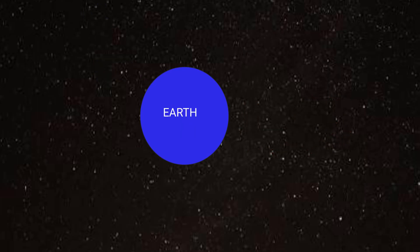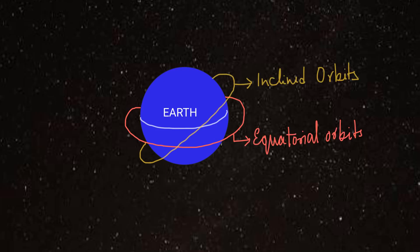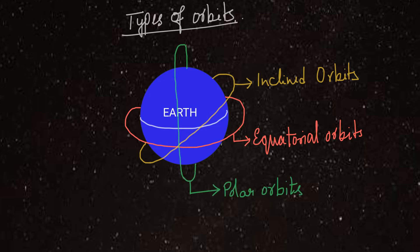We'll now see major types of orbits for our satellites. Suppose this is the equator of the earth. So, one can be our equatorial orbit which is directly above the equator. Then we can have inclined orbits. Then third major type of orbits can be polar orbits which move from north to south pole. So broadly these are three types of orbits.